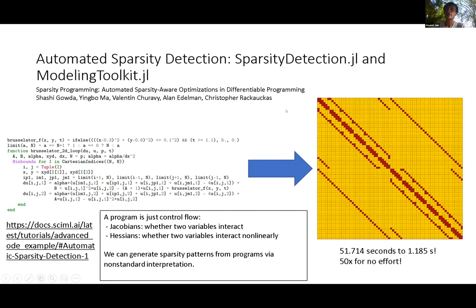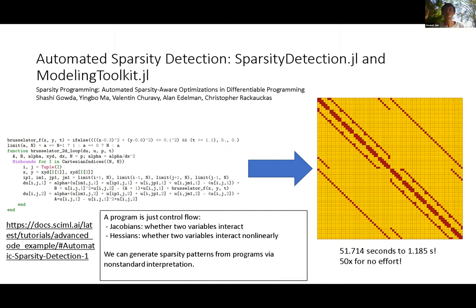Another cool feature is propagating the sparsity pattern of the Jacobian for parallelization. Many of the interactions between variables are zero, and we don't want to waste time on those zeros. This is very similar to automatic differentiation — you attach a piece of information to your code as a new type and push it forward throughout the program. It's the same concept as the dual number arithmetic used for automatic differentiation.